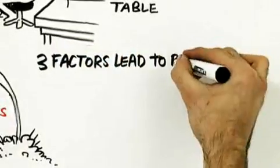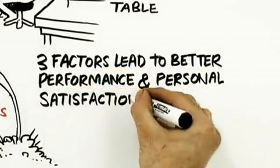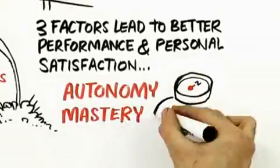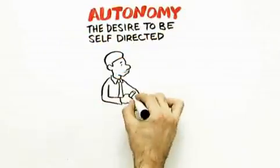Now once you do that, it turns out there are three factors that the science shows lead to better performance, not to mention personal satisfaction: autonomy, mastery, and purpose.